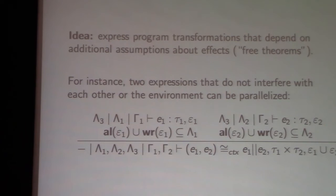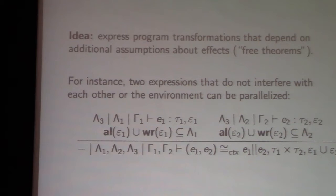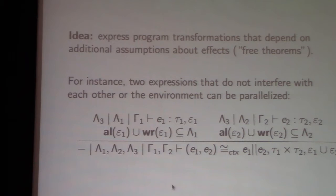What can we do with this type system? One thing is to justify program optimizations. You can think of these as free theorems that depend on the typing of the expressions involved. Instead of analyzing the concrete expressions, you just look at the typing — they're like parametric-style theorems except proven using a semantic model that actually models the meaning of these effect annotations. Here's one example: if two expressions don't interfere with each other or the environment, then running them in parallel or sequentially is equivalent.